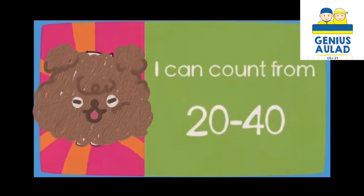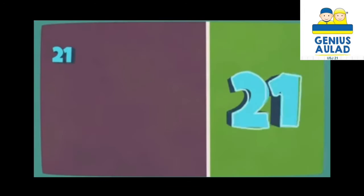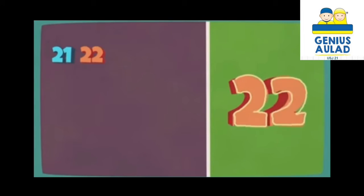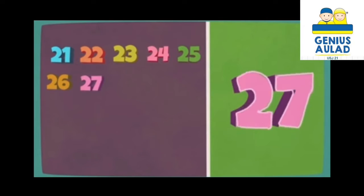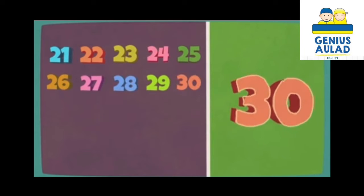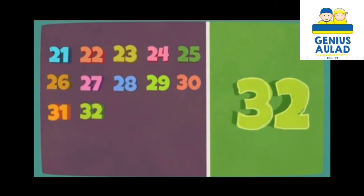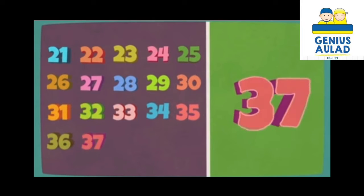I can count from 20 to 40. I can count from 20 to 40: 21, 22, 23, 24, 25, 26, 27, 28, 29, 30, 31, 32, 33, 34, 35, 36, 37, 38, 39, 40.